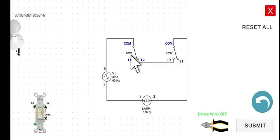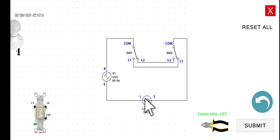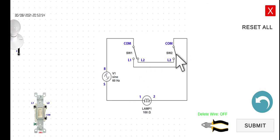If you click this one off, this one will turn off. Also at the same time, if you click this one on, this lamp one will be turned on.